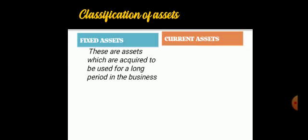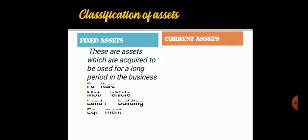Fixed assets are assets which are acquired to be used for a long period of time in the business. When a fixed asset is acquired, it is expected to be used for a period of more than a year — two years, three years, four years, five years. Examples include furniture, motor vehicle, land and building, and equipment. These are assets that you use for a long period of time in the business.